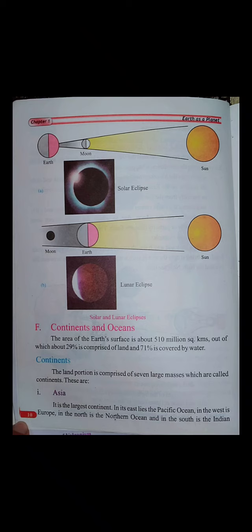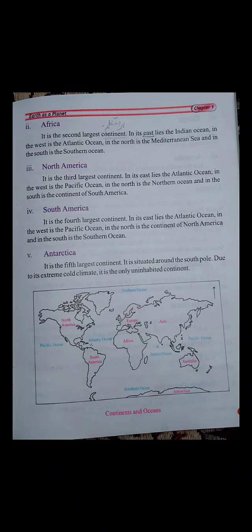The land portion is comprised of seven large masses which are called continents. The first is Asia. It is the largest continent. In its east lies the Pacific Ocean, in the west is Europe, in the north is the Northern Ocean, and in the south is the Indian Ocean.